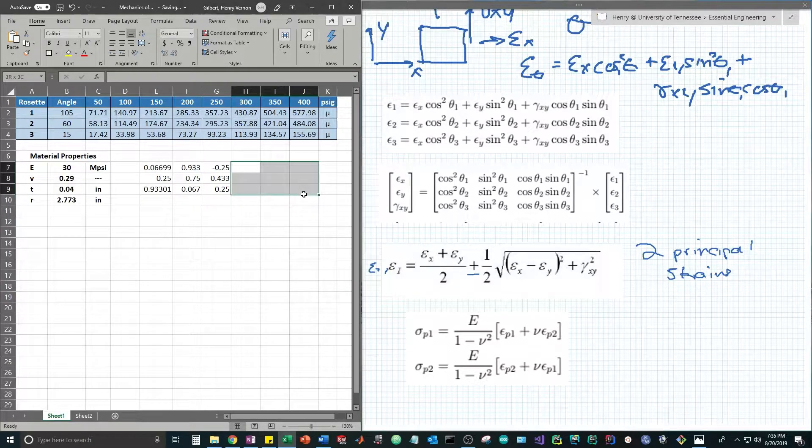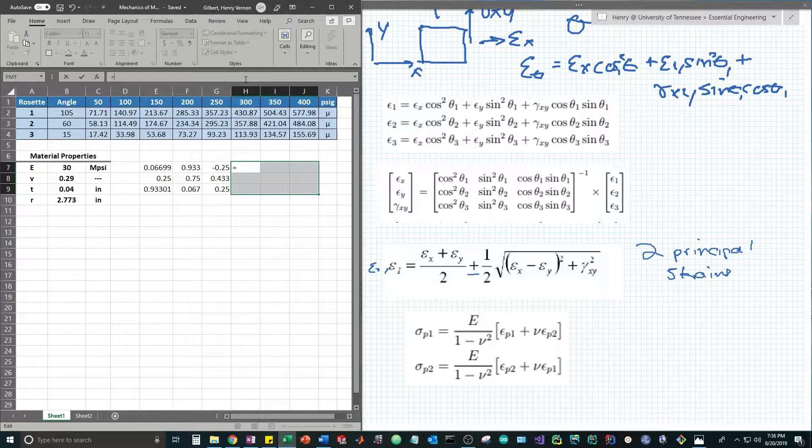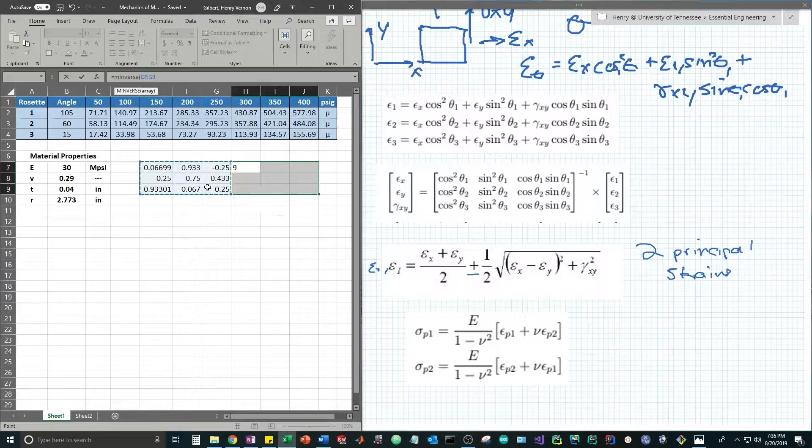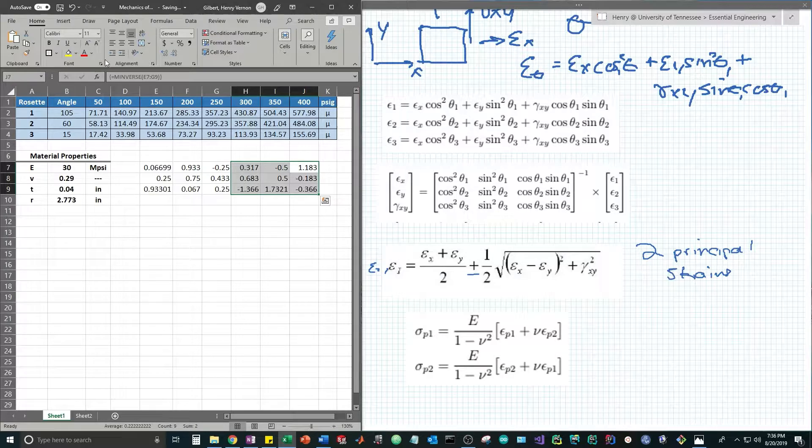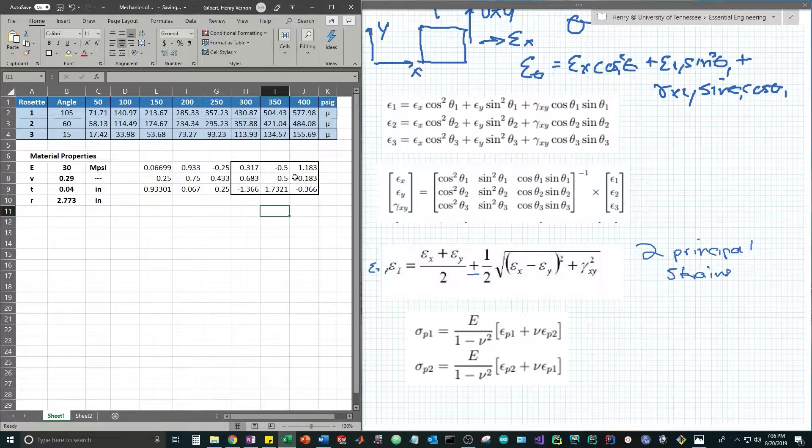To actually get the inverse of this matrix in Excel, we highlight a 3x3 block and type MINVERSE which stands for matrix inverse. We select the matrix we're taking the inverse of, close the parentheses. In Windows we hit control shift enter to perform an array operation. Now this is our actual inverse matrix.